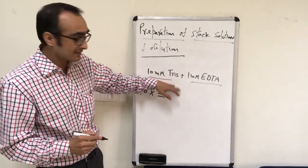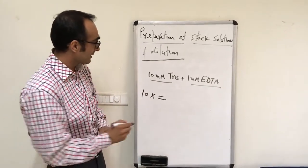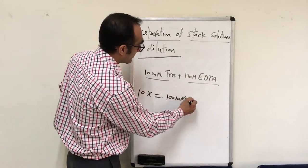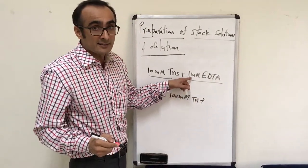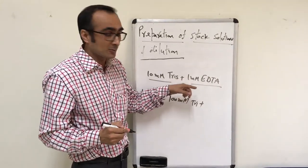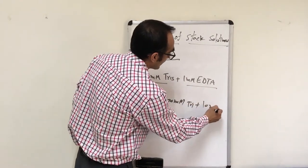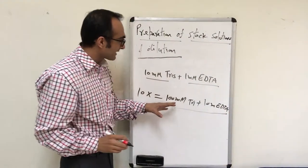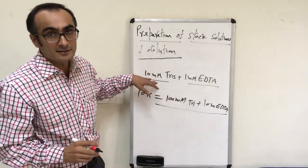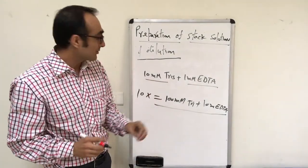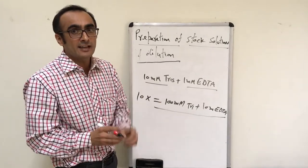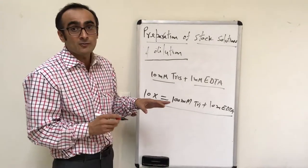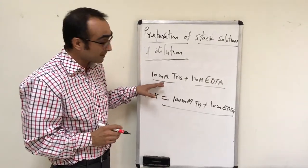So if you are using 10 mM Tris, for preparing the stock solution of this buffer you will make 100 mM Tris, and you multiply the concentration of EDTA by the same factor — so 10 mM EDTA. That is how you prepare a 10X buffer of the desired concentration, which is called the stock solution. This stock solution can be diluted 10 times as per your requirement, solving the problem of storing high volumes.